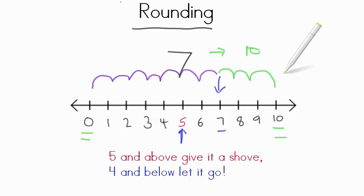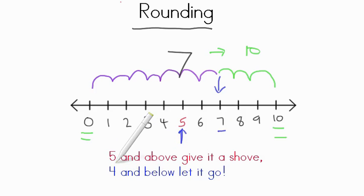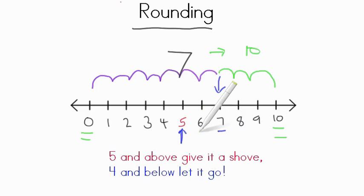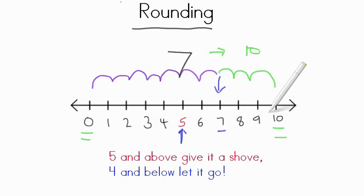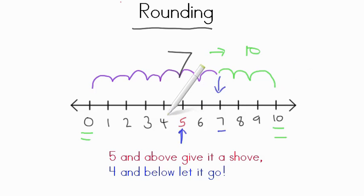We have closer to 10 objects than we have closer to 0. Another way to remember this is this little saying: 5 and above, give it a shove. 4 and below, let it go. So if it is on the midpoint or above the midpoint between the two benchmark 10s, you're going to go up. If it is 4 or below that, you're going to go down to the lower benchmark 10.